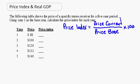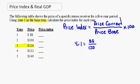The problem says that the following table shows the price of a specific stereo receiver for a five-year period. The key here is that the base year is year three. So year three is the base year we use for the price index. To calculate the price index for year one, we take 88, which is the current price, divided by the base year price of 120, multiplied by 100.